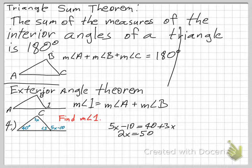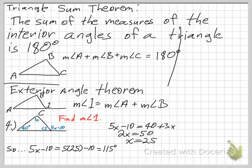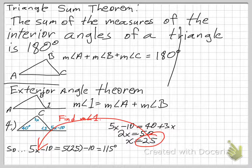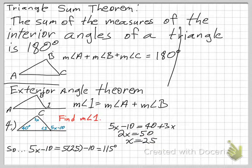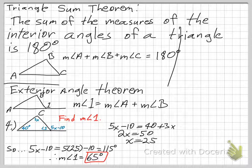Solving the algebra: 2x equals 50, so x equals 25. But the problem asks for the measure of angle 1, not just x. The measure of angle 1 — the exterior angle — is 5x − 10, which equals 5(25) − 10 = 115 degrees. Since angle 1 and the exterior angle form a linear pair, the measure of angle 1 is 180 − 115 = 65 degrees.